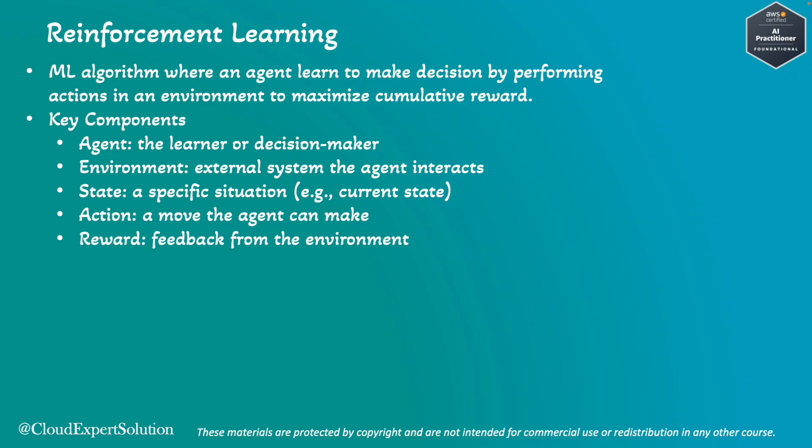Finally, the reward is feedback from the environment. For example, we can give a treat to a dog when training it. In a game design context, positive points or coins are given when the robot performs the intended action, while a negative point is given if it hits a wall or blocks its own progress.